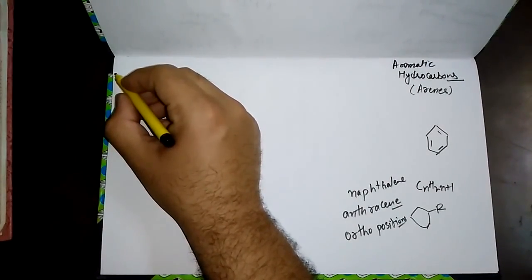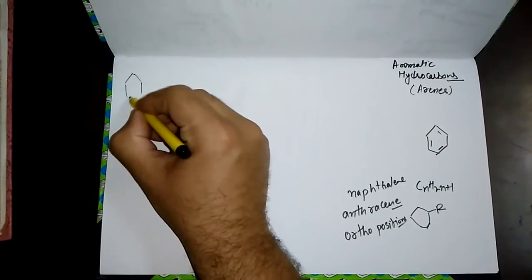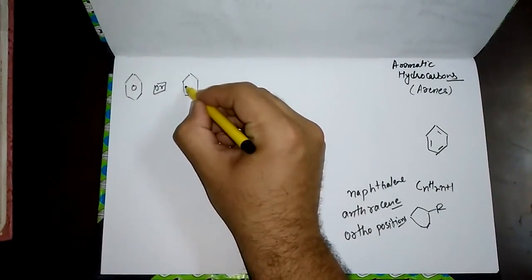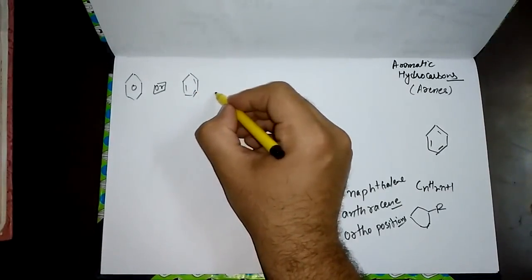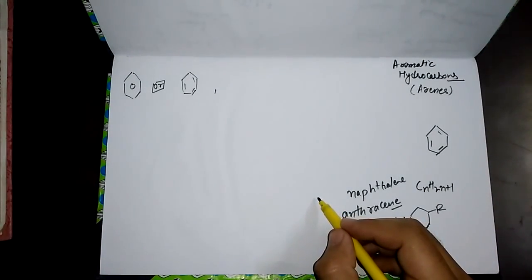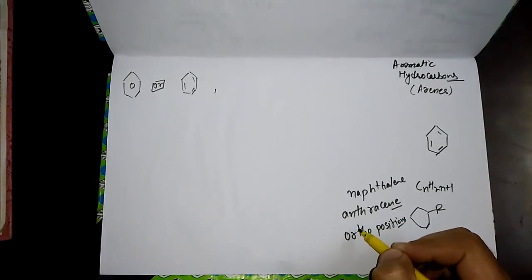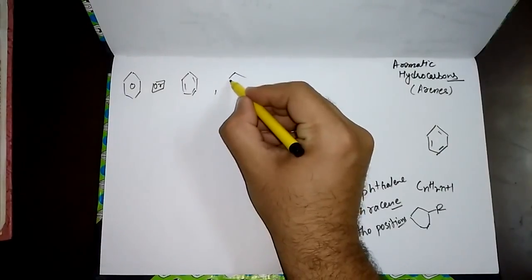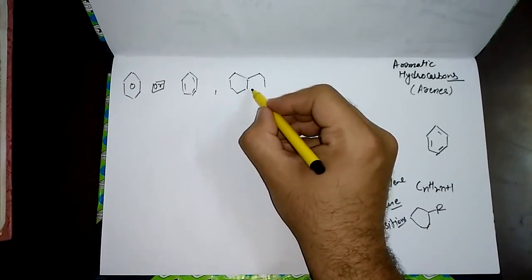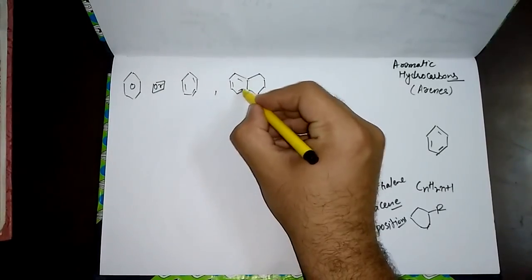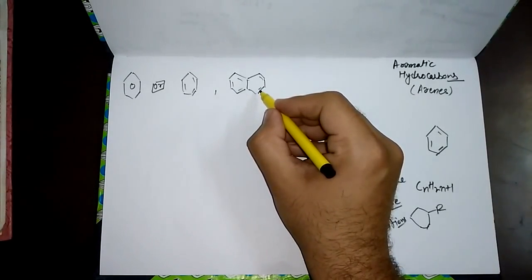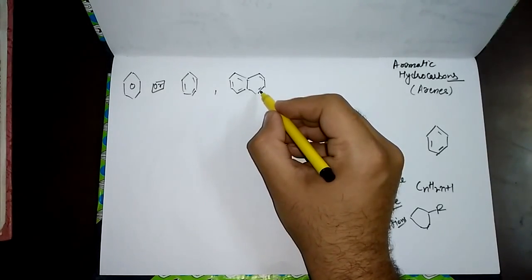The common parent ring systems in aromatic compounds include: first, benzene — which can also be drawn with alternating double bonds. Then we have naphthalene, which has two benzene rings fused together at ortho positions, each with alternating double bonds. Similarly, we have anthracene, which has three benzene rings fused together.